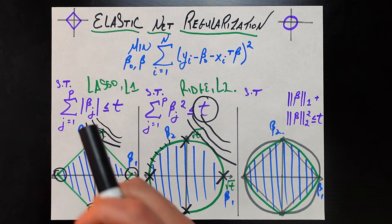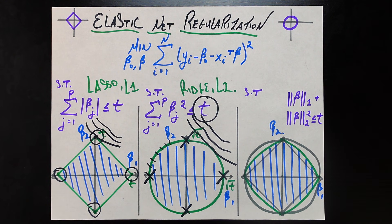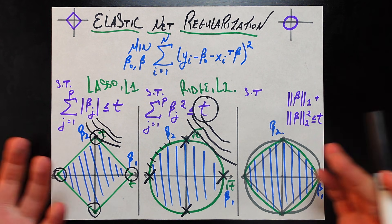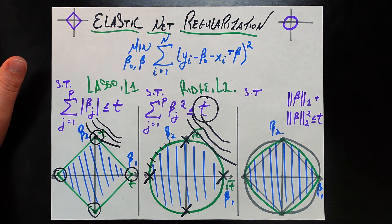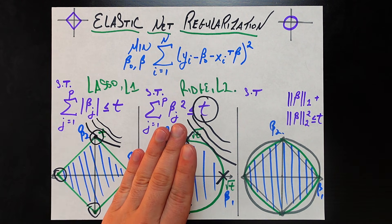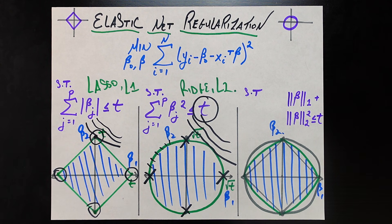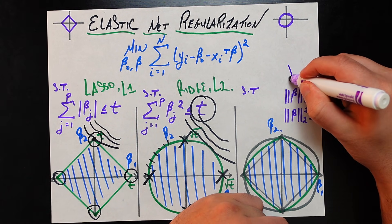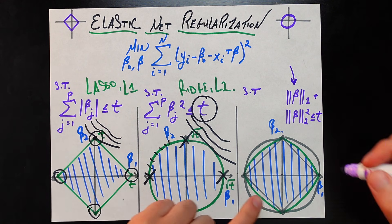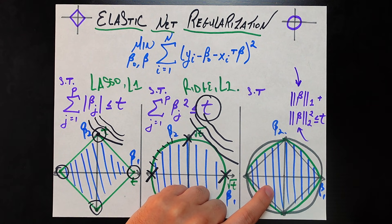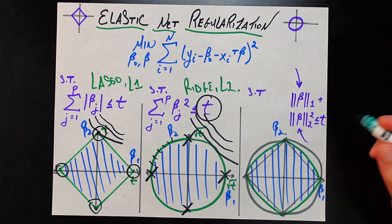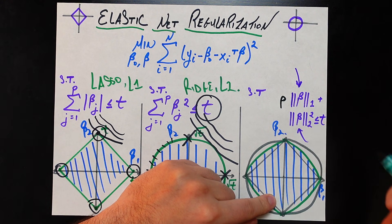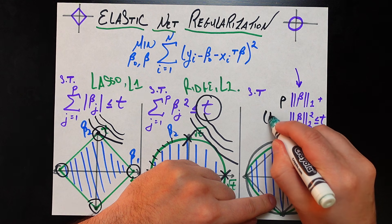There are definite pros and cons to both lasso and ridge, so how do we get a compromise that has the best of both worlds? That is exactly where elastic net regularization comes in. It is not anything new — it is actually a combination of lasso and ridge, mixing them together. In elastic net, one piece is exactly the lasso penalty and the other piece is exactly the ridge penalty, combined together.